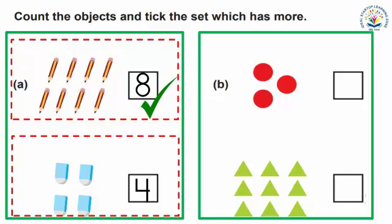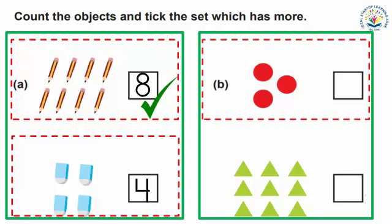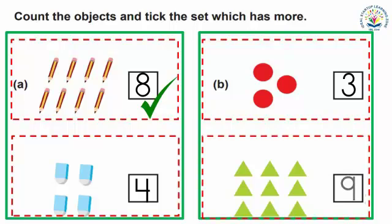Look at Set B. How many circles can you see on the screen? Yes, there are three circles. And how many triangles are there? There are nine triangles. So which has more? Yes, triangles are more than circles.